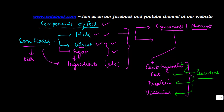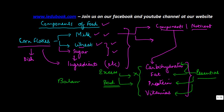Lack of any of them can lead to certain types of diseases. So having all of them in a balanced manner is very important. If there is lack of any of them, that is not good for the body. However, having excess of any one of them is also bad — for example, fat in excess is bad for health, and proteins in excess are also bad.